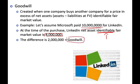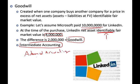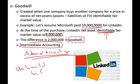In this example, the goodwill is $2 million. That's all you need to know for this course — in intermediate or advanced accounting there is more detail. Also know that goodwill has unlimited life, meaning it is not amortized.